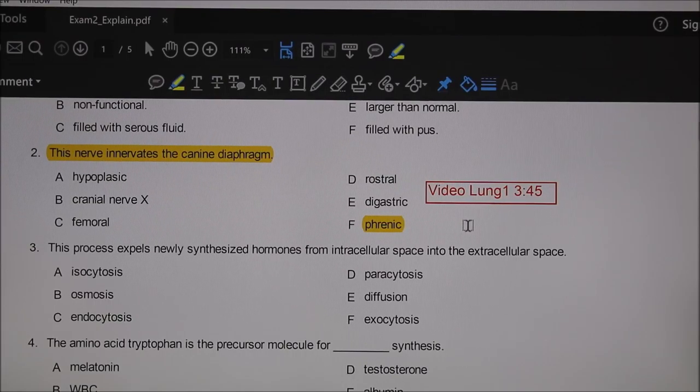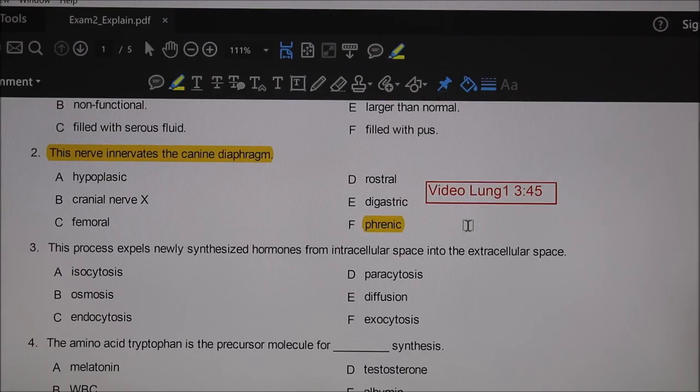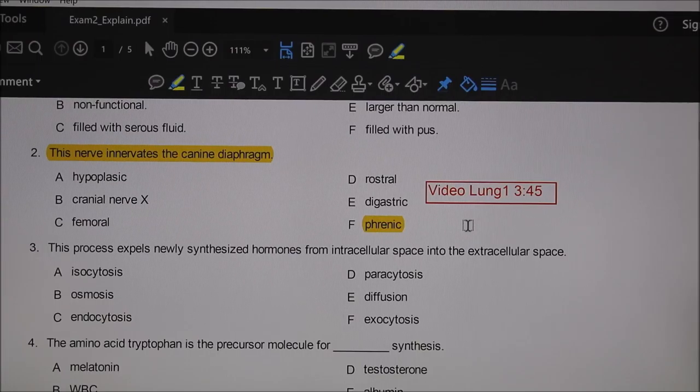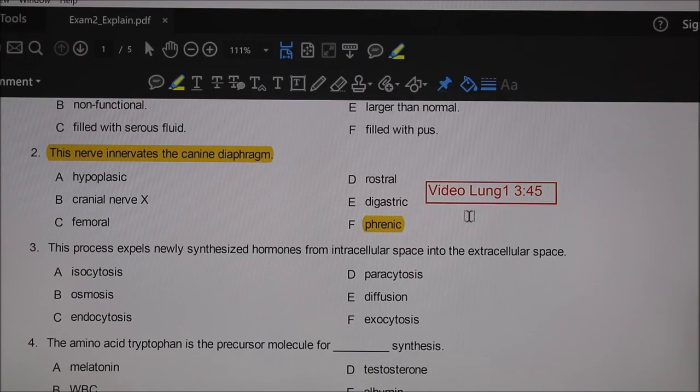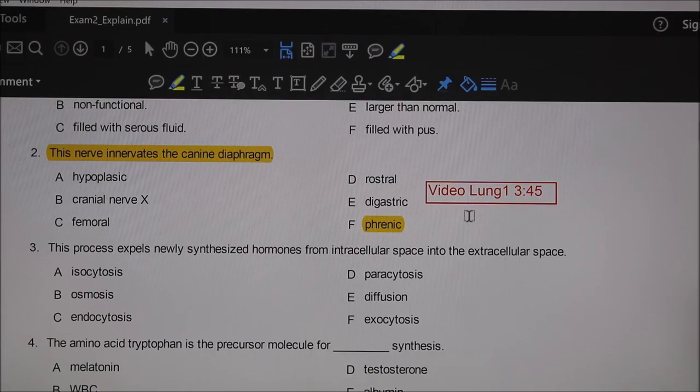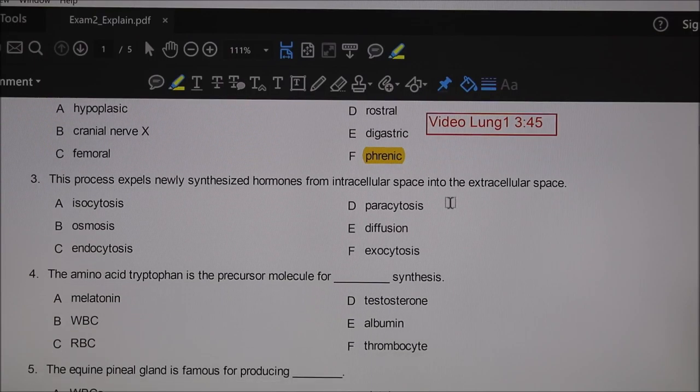The answer is the phrenic nerve. So now in your notes, apart from this exam, you could put: the phrenic nerve innervates the canine diaphragm. Don't let it lie on a page—go and write it down.